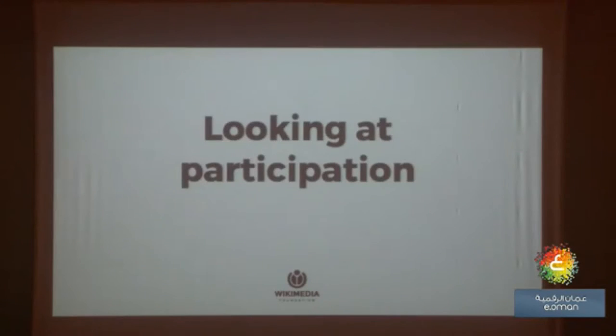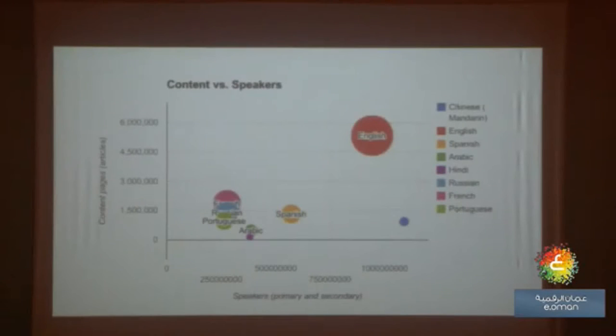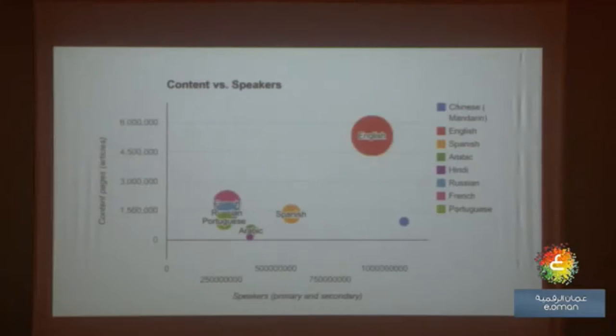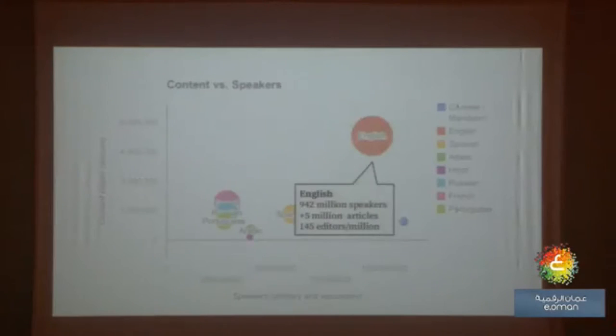We also see trends where people in this region may prefer to edit in English and on topics that are not regional topics — an interesting dynamic for the MENA region. I've mapped out the top ten languages and their Wikipedias, with the size of the circle representing the size of the contributor base. English has the most contributors per million. Arabic is the dark green circle toward the bottom, and we also have Portuguese, Russian, French, Spanish, and Hindi. With English we have 145 editors per million looking at the past 30 days — someone making at least one edit.